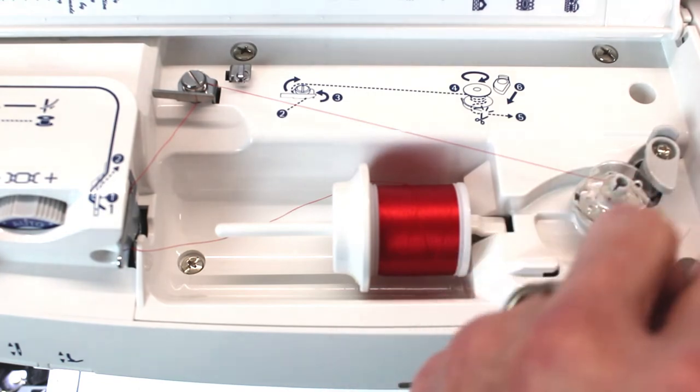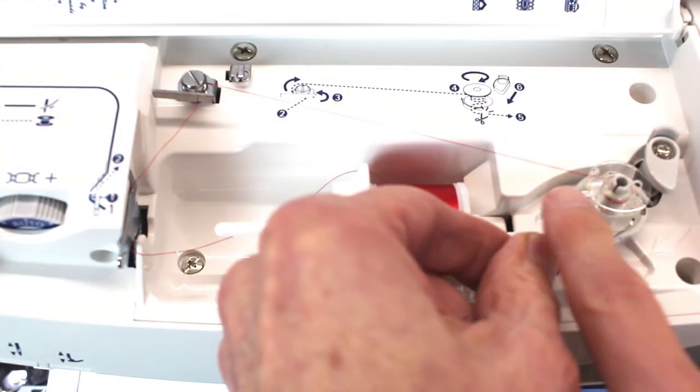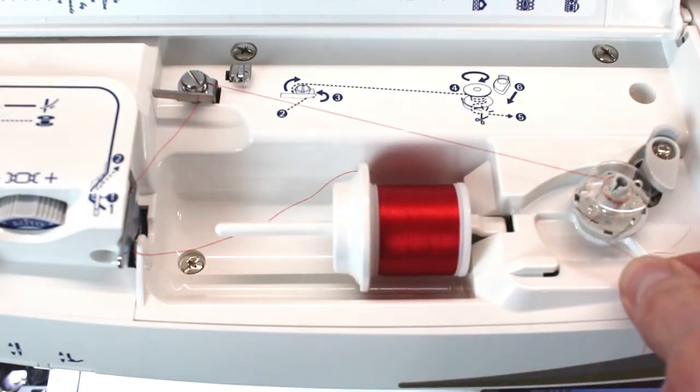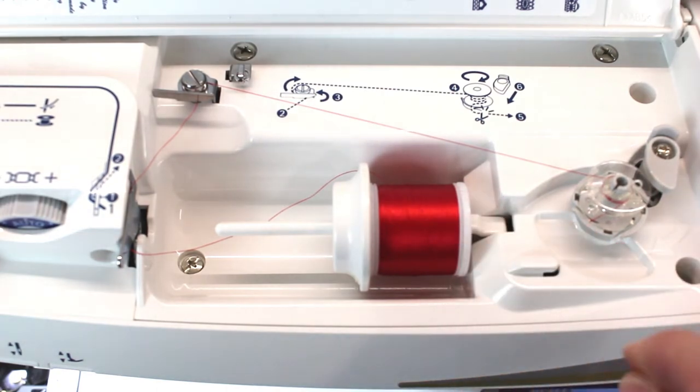And we're going to wrap around the bobbin three, four, five times, however many times you're comfortable. Then you're going to find one of those little nubs on the plate and pull the thread into it and keep pulling the bobbin because it's going to separate that little tail thread you were holding from the rest of the bobbin.